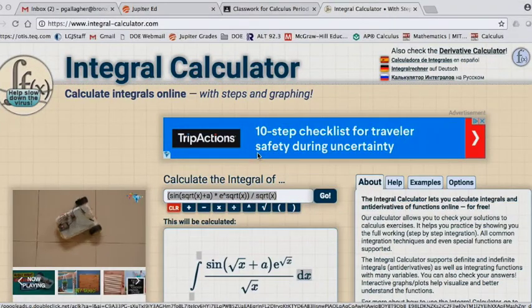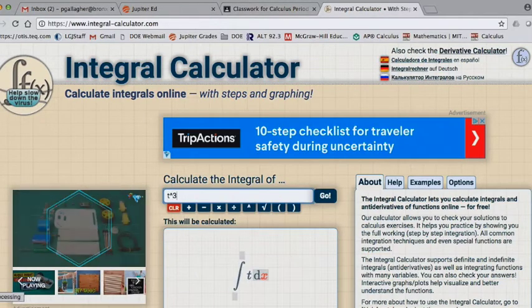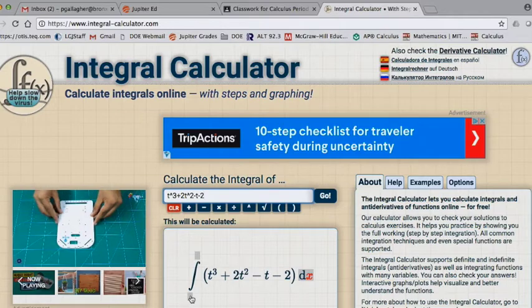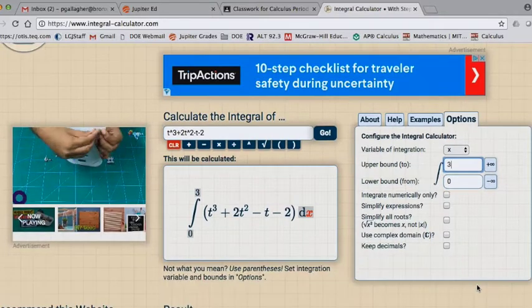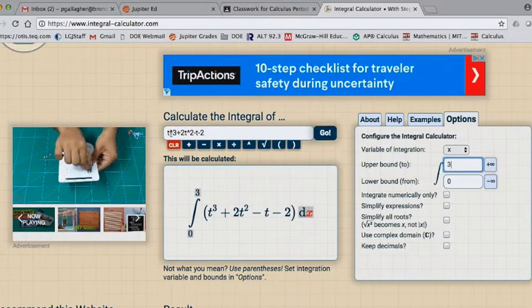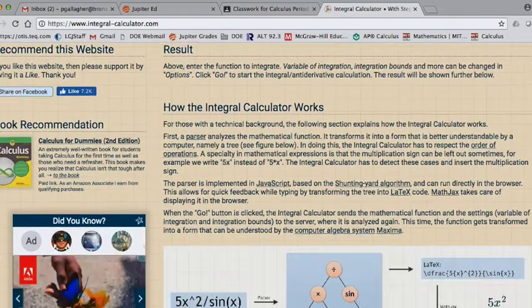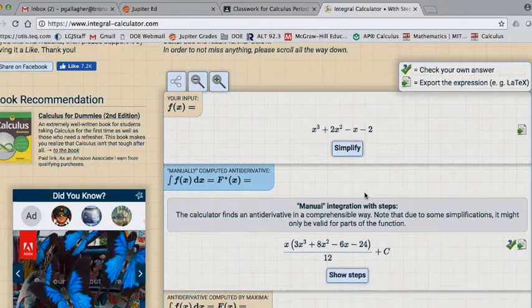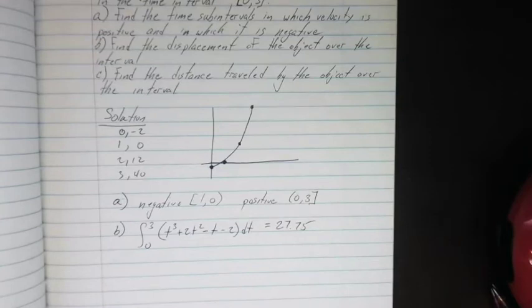So this is the integral calculator, which we have in the resource section. Hopefully this is not news and everyone has already seen it before. So I'm just going to do t to the third plus 2t squared minus t minus 2. Double check. Plug in my integral as well. I want this to be from 0 to 3. Oh, it's giving me an error because I put in an x. So I'm just going to change all these to x's. That's perfectly all right. Doesn't change a darn thing. So that's our answer. 27.75. That's the total displacement.